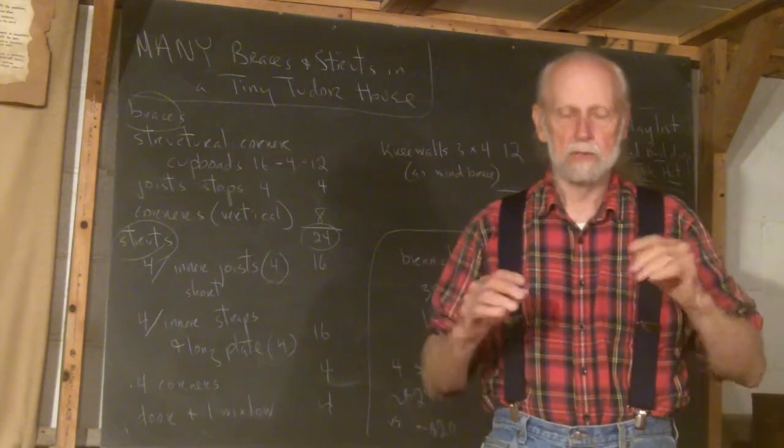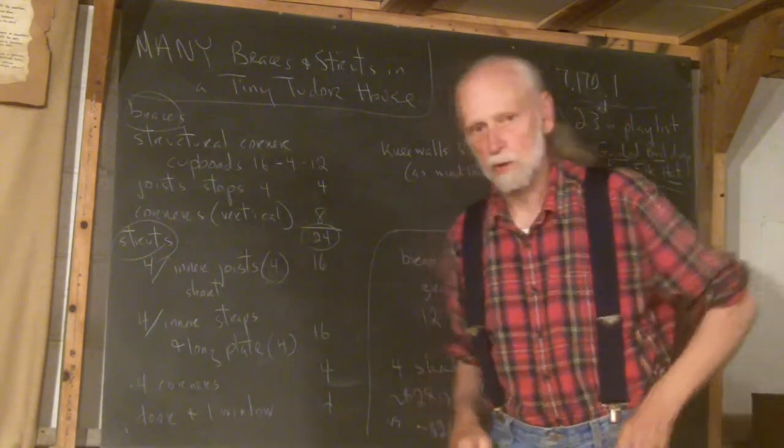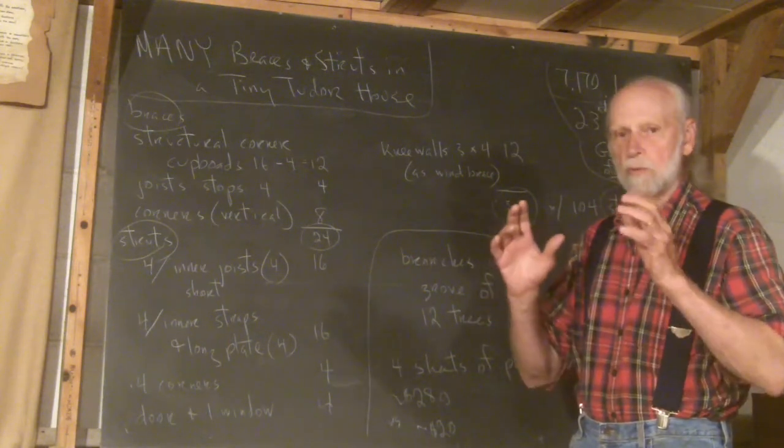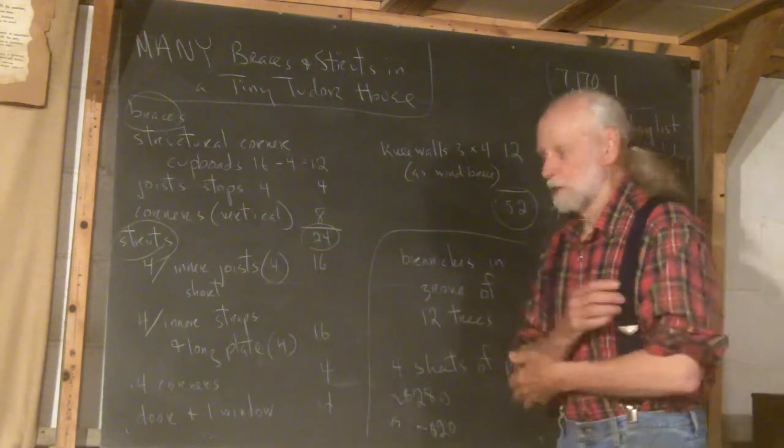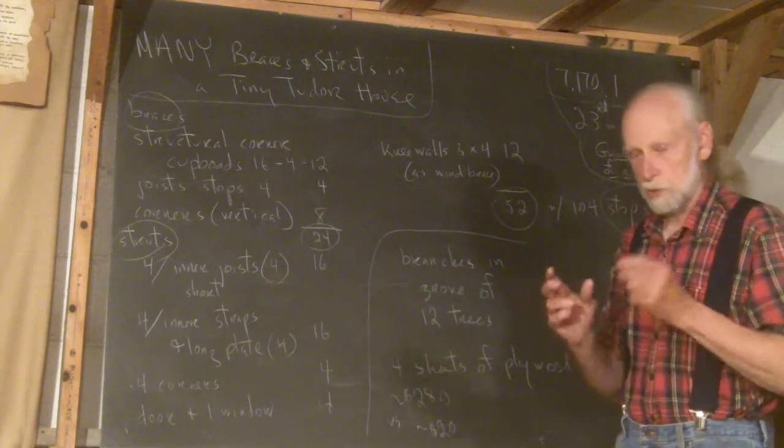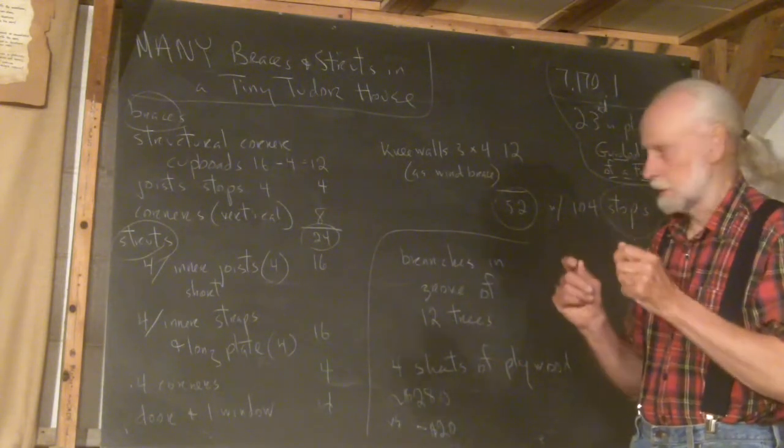The corners, the vertical struts, braces in the corners - each corner will have two long ones that go from basically the plate down to the sill, and there'll be two in each corner. They'll be long, so that's eight. So we've got 24 braces that are going to show.